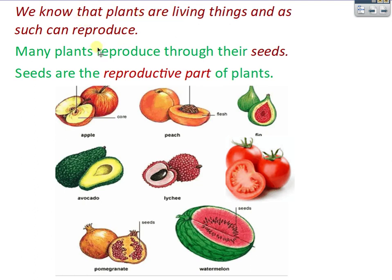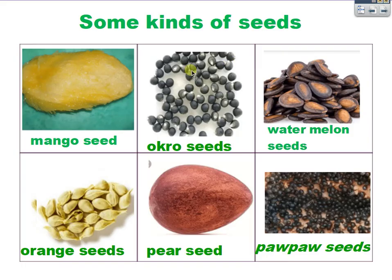Now, we know that plants are living things and as such can reproduce. Many plants reproduce through their seeds. Therefore, seeds are the reproductive parts of the plants, meaning they are the parts that help the plant to bring new plants. Look at this plant — you can see the watermelon, and you can see something within it: they are the seeds of the watermelon. The tomatoes also have seeds. All these plants here have their seeds within them.